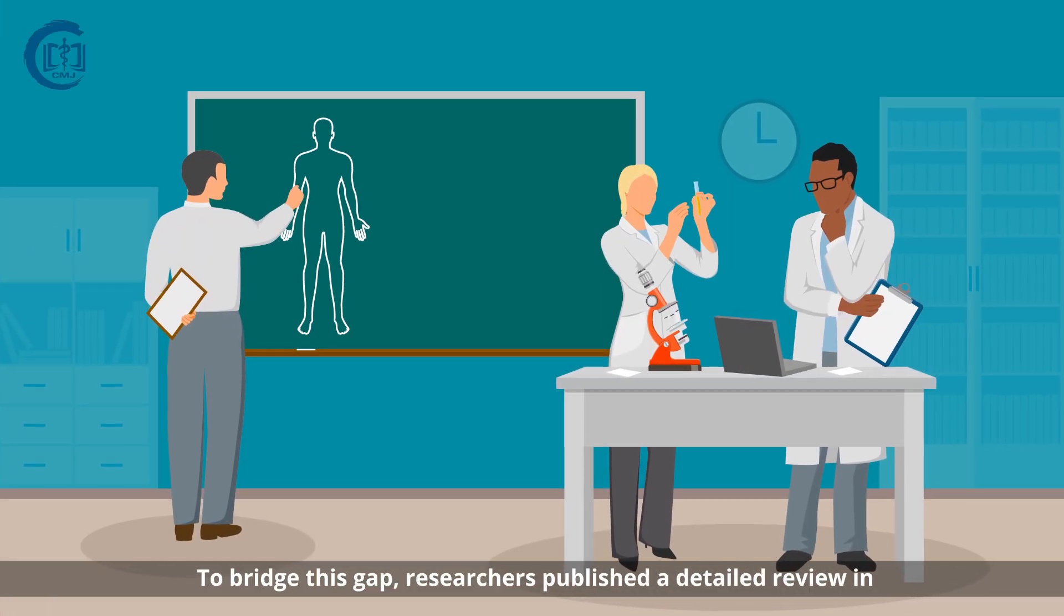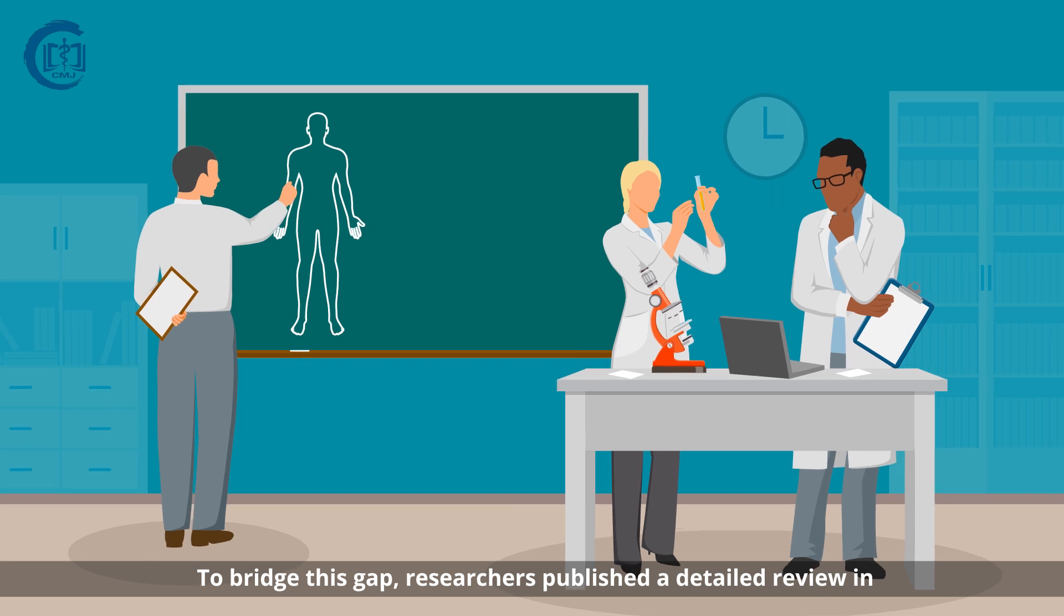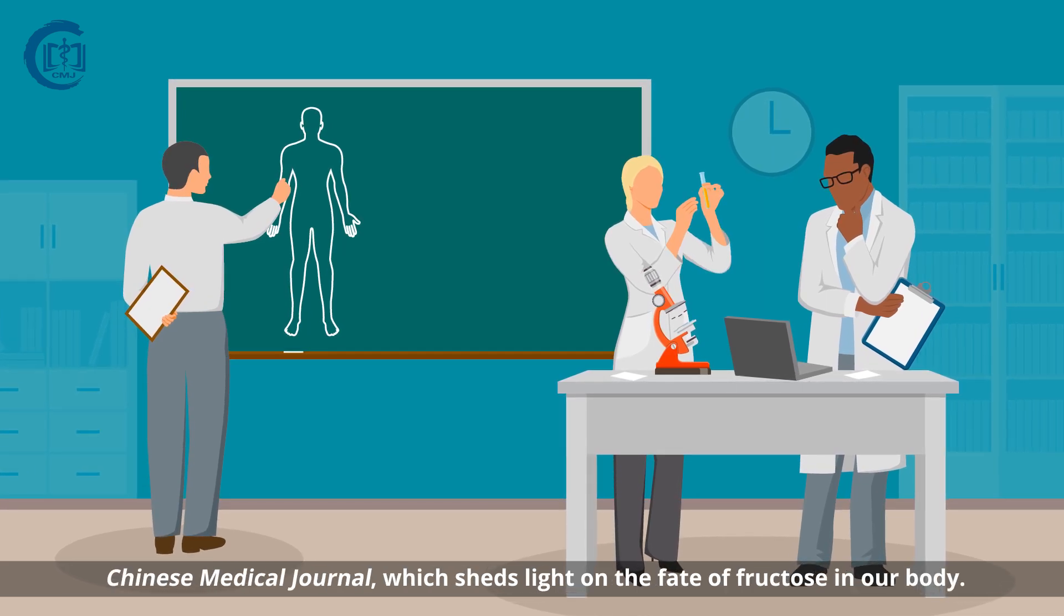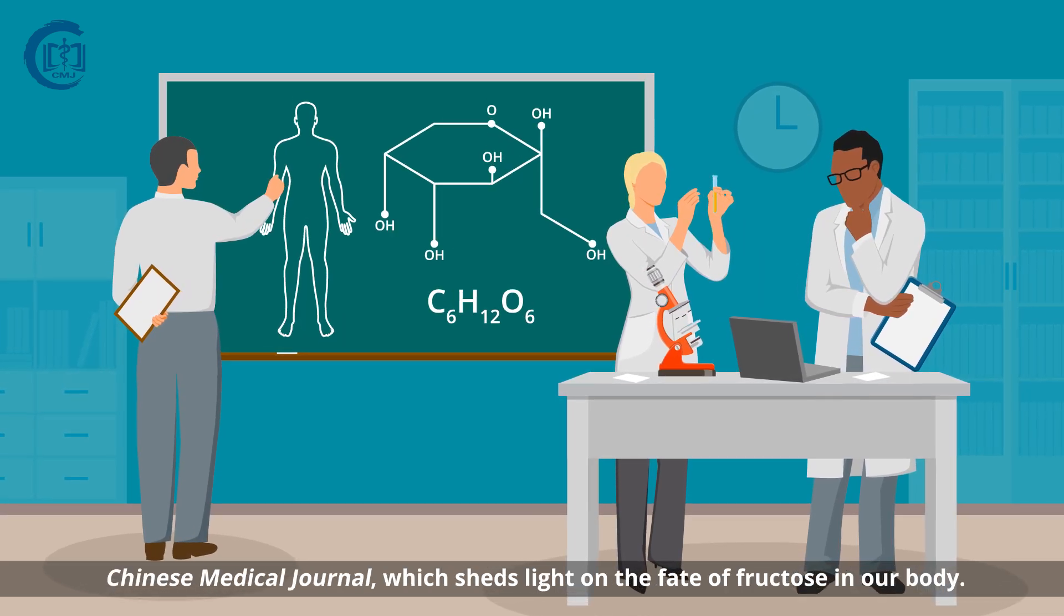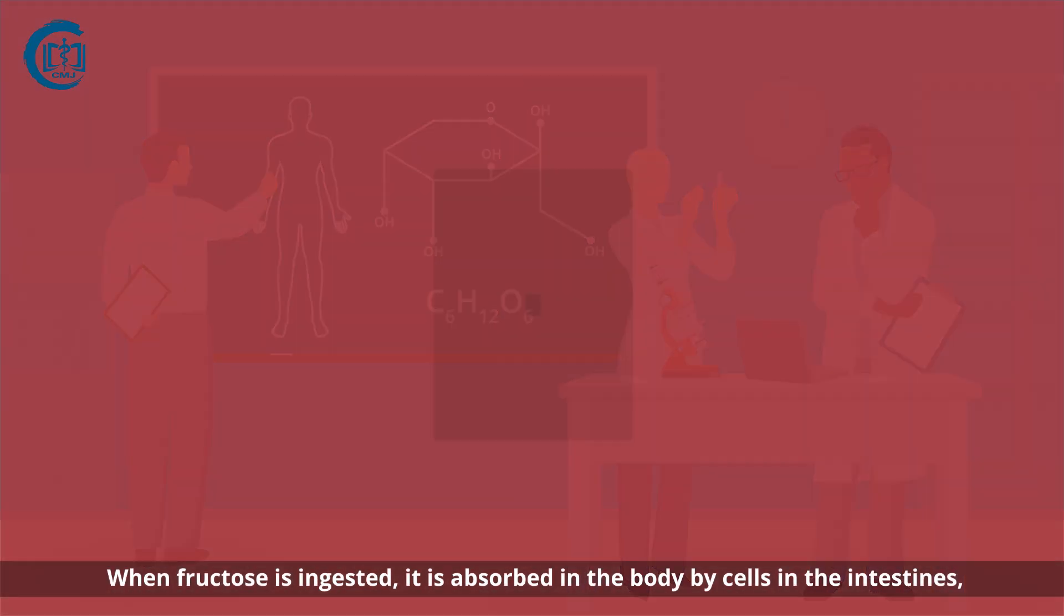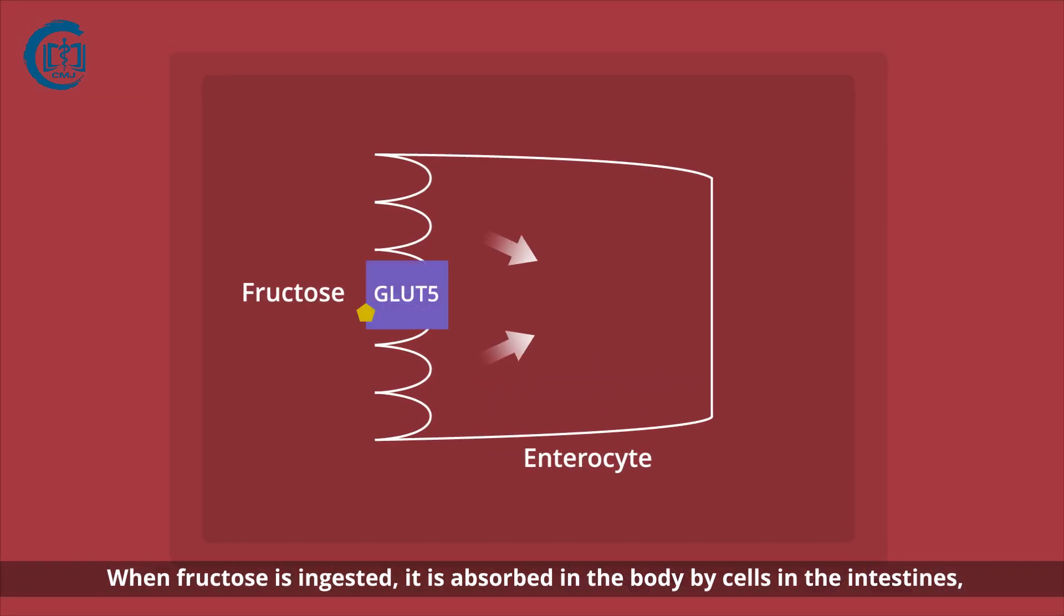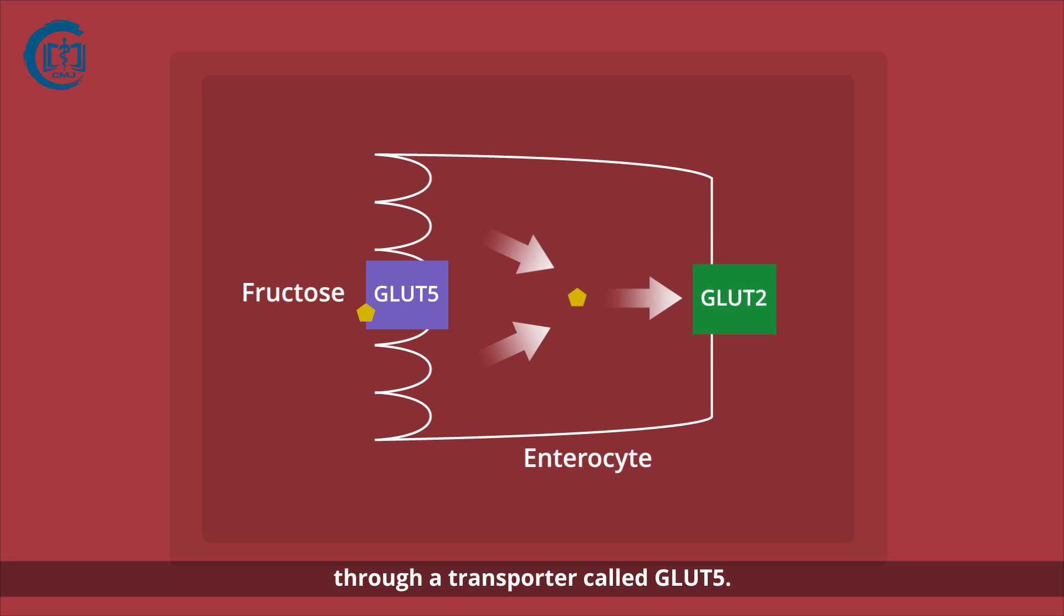To bridge this gap, researchers published a detailed review in Chinese Medical Journal, which sheds light on the fate of fructose in our body. When fructose is ingested, it is absorbed in the body by cells in the intestines through a transporter called GLUT5.